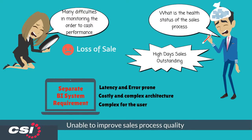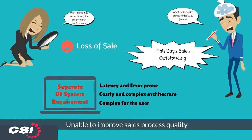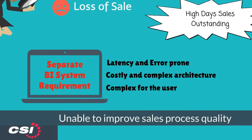Difficulties in monitoring order-to-cash performance result in a lack of immediate transparency. Traditional ERP systems do not provide embedded analytics to monitor sales process performance. Monitoring order-to-cash performance requires a separate BI system, replication of organisational data with long lead times, and the initial setup of a reporting front-end tool.